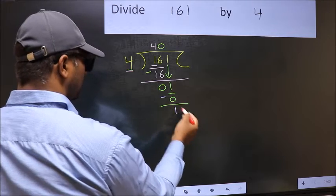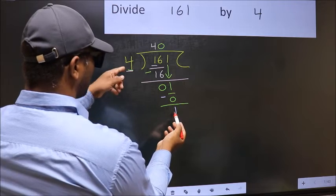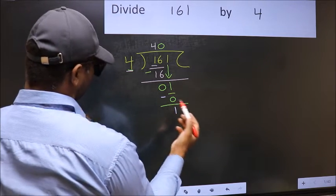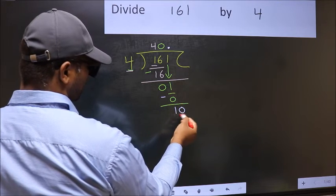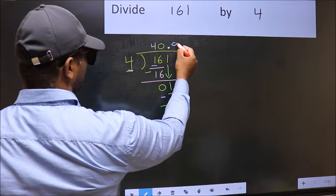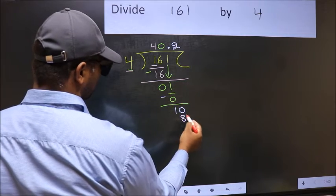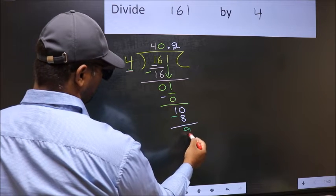Over here, we did not bring any number down, and 1 is smaller than 4. So now you can put a dot and take 0. So 10. A number close to 10 in the 4 table is 4 times 2 is 8. Now you should subtract. 10 minus 8 is 2.